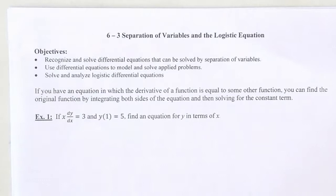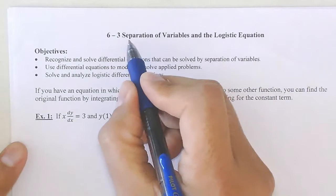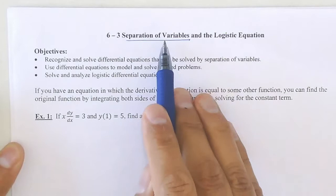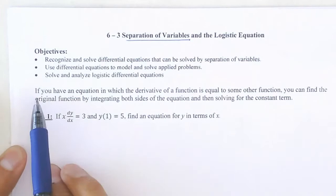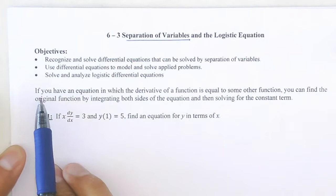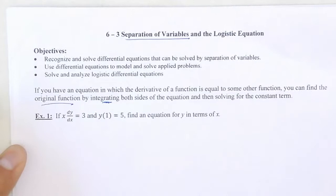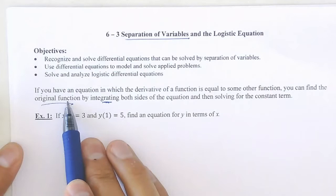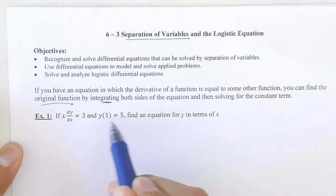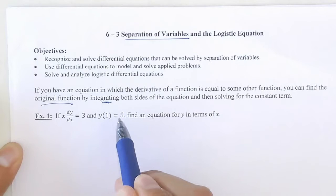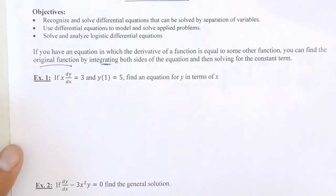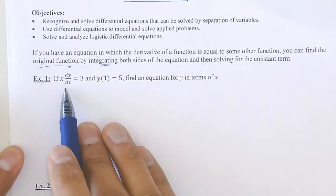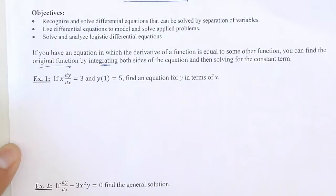Good morning class. Moving on to Section 6.3, we're going to talk more in depth about separation of variables. These separation of variable problems are going to get a bit more interesting than the previous sections. If you have an equation in which the derivative of a function is equal to the function, you can find the original function by integrating. Today we're also going to be given an initial value — like y(1) = 5 — that will allow us to find the constant. I always want to recommend: if you want to pause the video, do a little bit of work, and then come back and check what I'm doing.